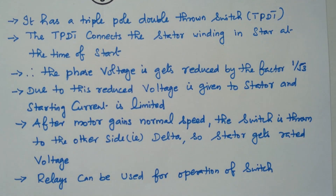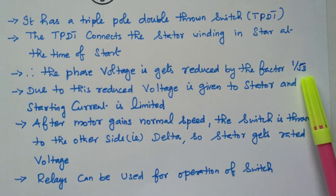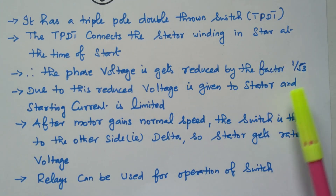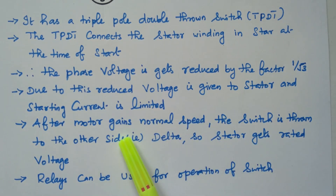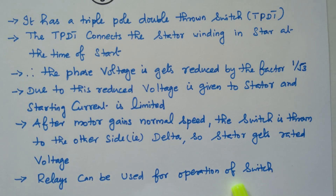After the motor gains normal speed, the switch is thrown to the other side — the delta connection. During delta connection, it will get the rated voltage. The relays can be used for operation of the switch; changing the switch from star connection to delta connection can be done by relays.